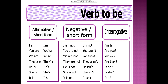That is the verb 'to be' — affirmative, negative, and interrogative. We also have short forms. Affirmative short forms: I am, you are, we are, they are, he is, she is, it is.